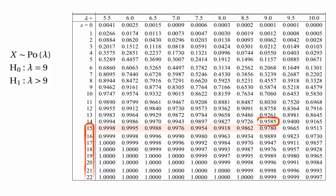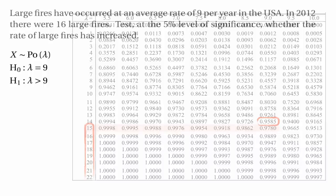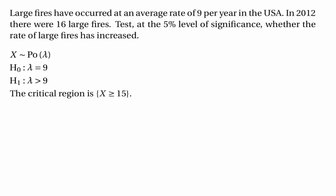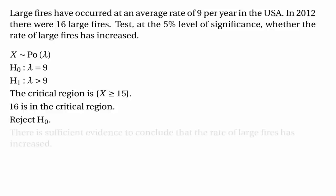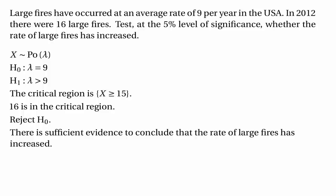The critical region is x greater than or equal to 15 — the numbers 15, 16 and higher. It's important to understand why we go to the row below: 0.9585 is the probability of getting 14 or less, so 1 minus 0.9585 is the probability of getting 15 or more. Since 16 is clearly in the critical region, this is another way of seeing that we should reject H0, and we can conclude that the rate of large fires has increased.